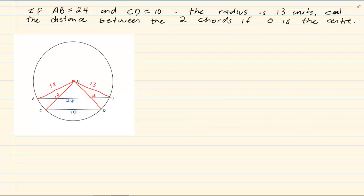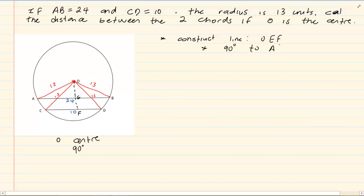Right, then it tells you, calculate the distance between the two chords. If O is the center, they're emphasizing O is the center because that then gives you permission to use other information. And then I construct a line that is 90 degrees, or you can say I'm constructing a line that is the midpoint. Let's make it O, E, F. And we are saying that it is 90 degrees to AB and CD. Now, as soon as you did that, if you've got the center and 90 degrees, then we've got the bisect, the midpoint.